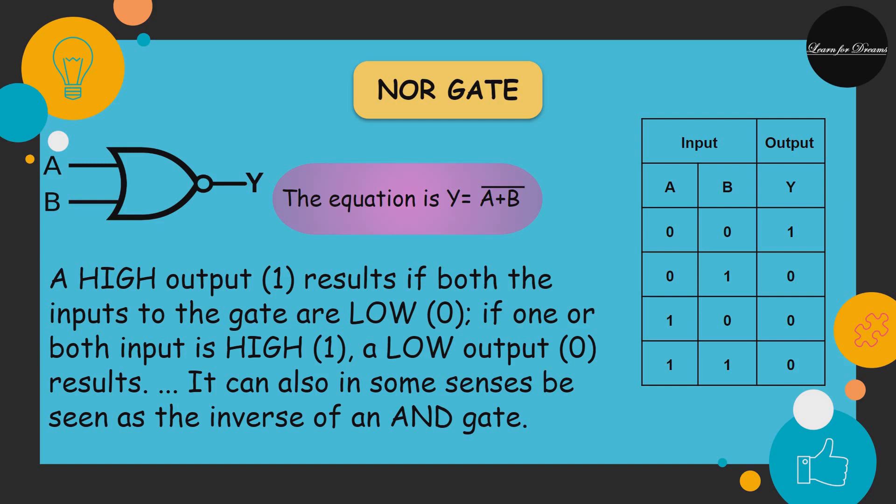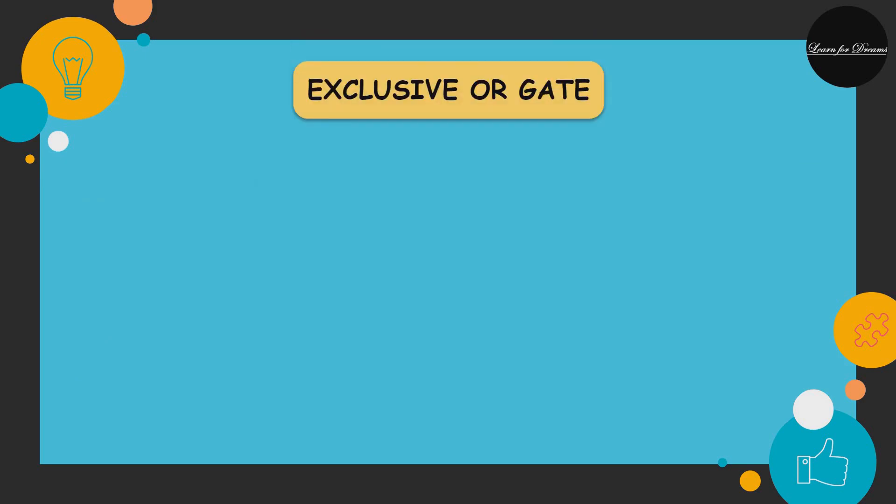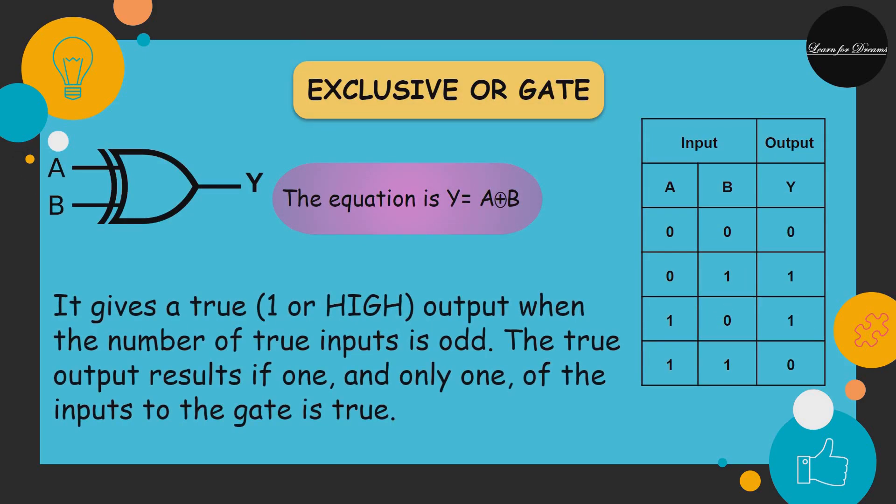Now EXCLUSIVE OR, or XOR gate, is a digital logic gate that gives a true or high output when the number of true inputs is odd. An XOR gate implements an exclusive OR, that is, a true output results if one and only one of the inputs to the gate is true. If the value of A and B both is 1 or A and B both is 0, then the output is 0.